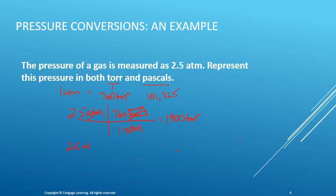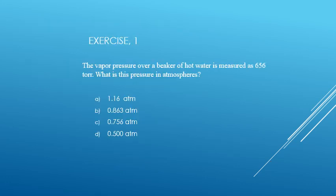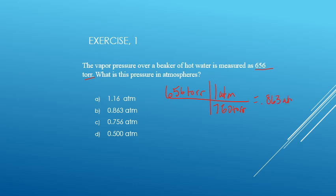And then if we do the same thing: 2.5 atmospheres times 101,325 Pascals per atmosphere — the atmospheres cancel, leaving Pascals — and with two significant figures we get approximately 250,000 Pascals. In this first example problem, the vapor pressure over a beaker of hot water is measured at 656 Torr. What is the pressure in atmospheres? We start with 656 Torr and we know there are 760 Torr in one atmosphere, so 656 divided by 760 gives us 0.863 atmospheres.